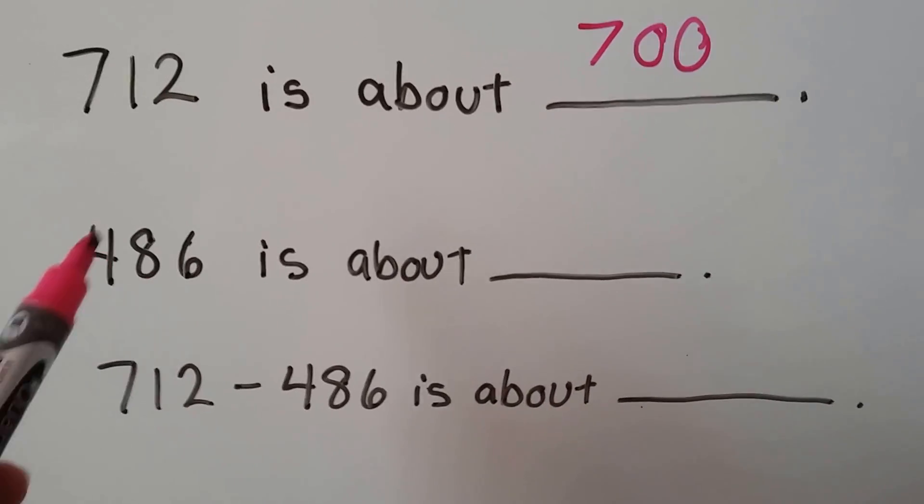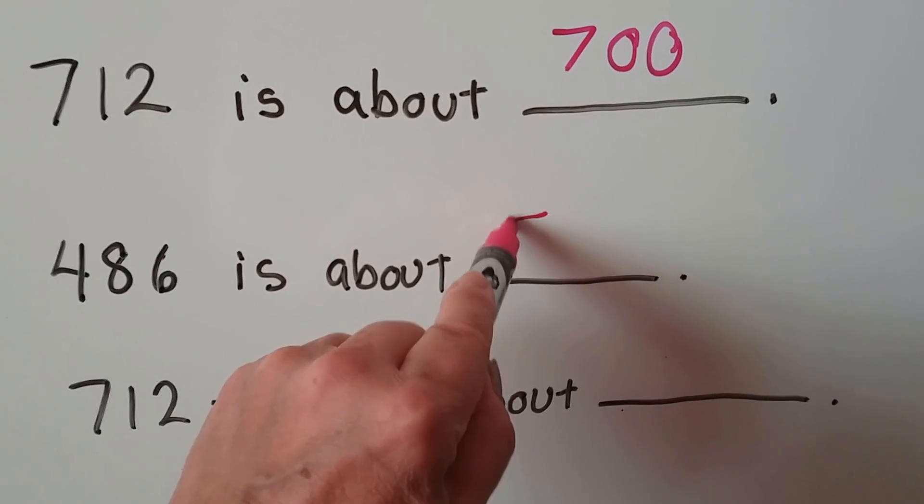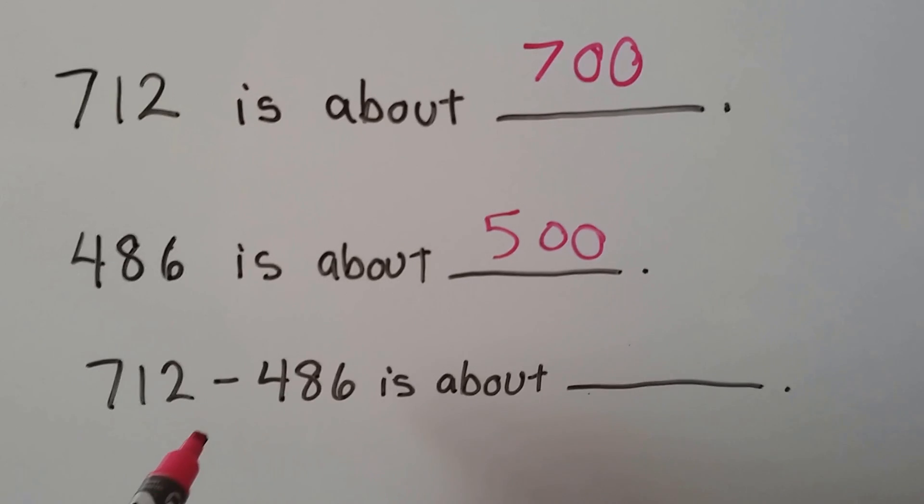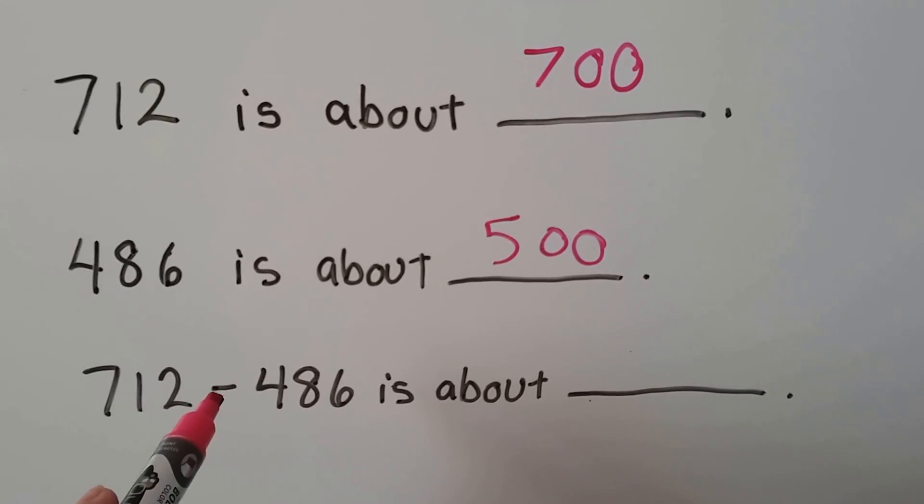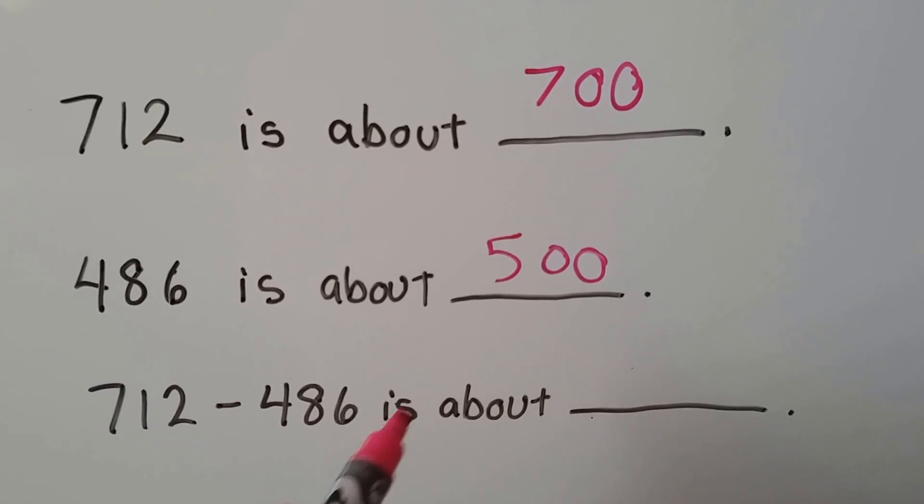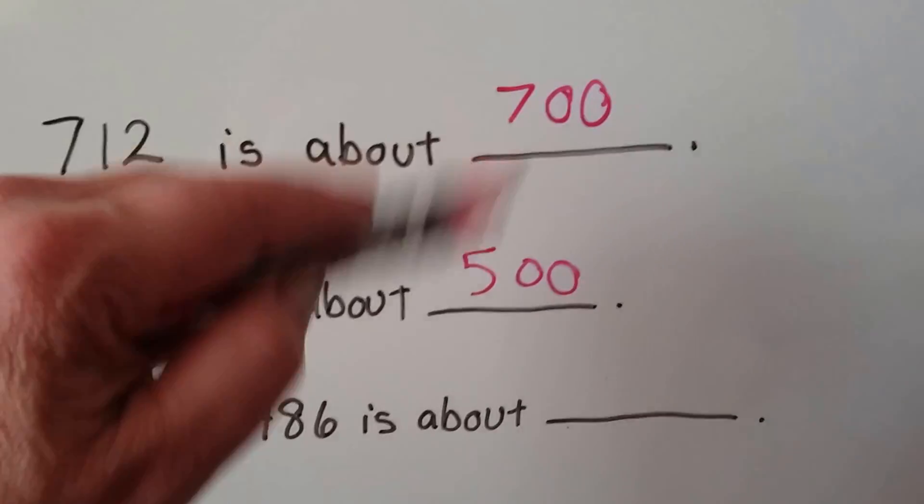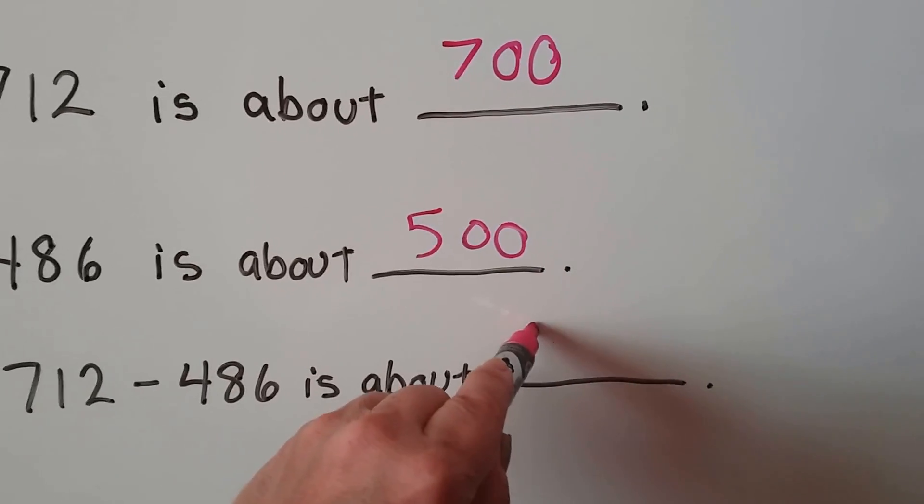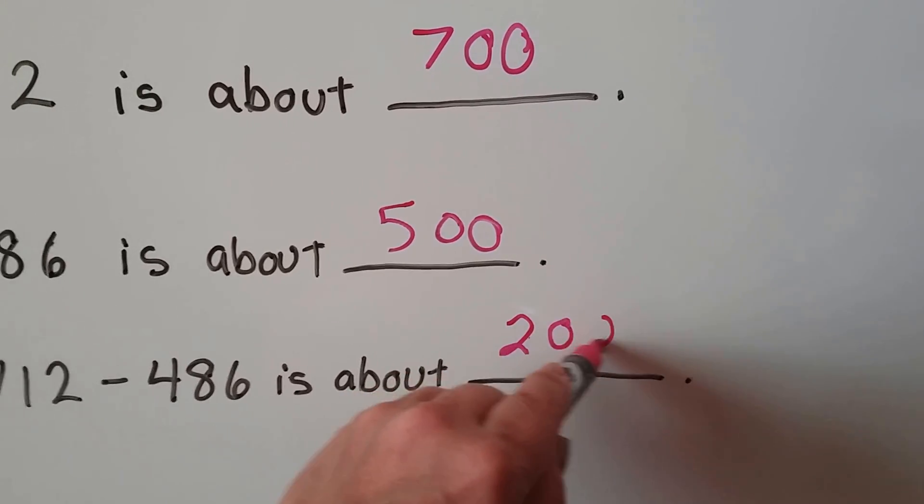So 712 minus, remember the subtraction, minus 486 is about how much? We subtract these: 7 minus 5 is 2. We put our two zeros in the tens and ones place, and our estimate is 200.